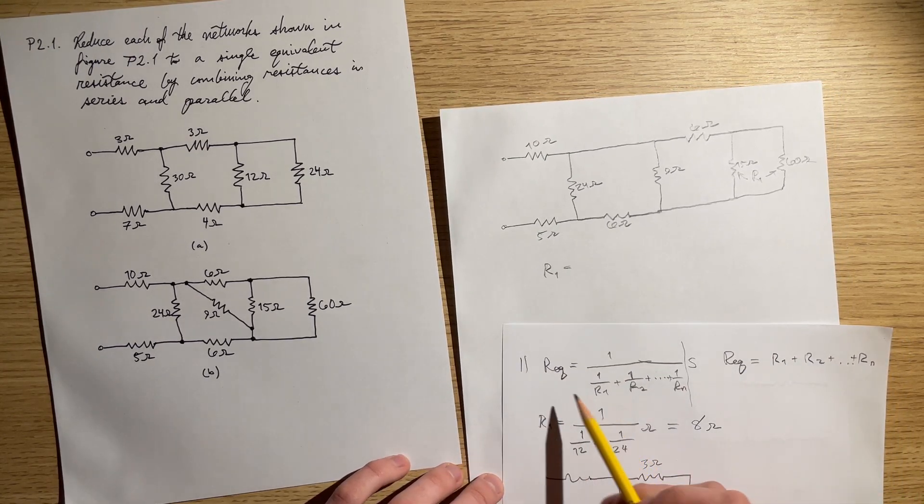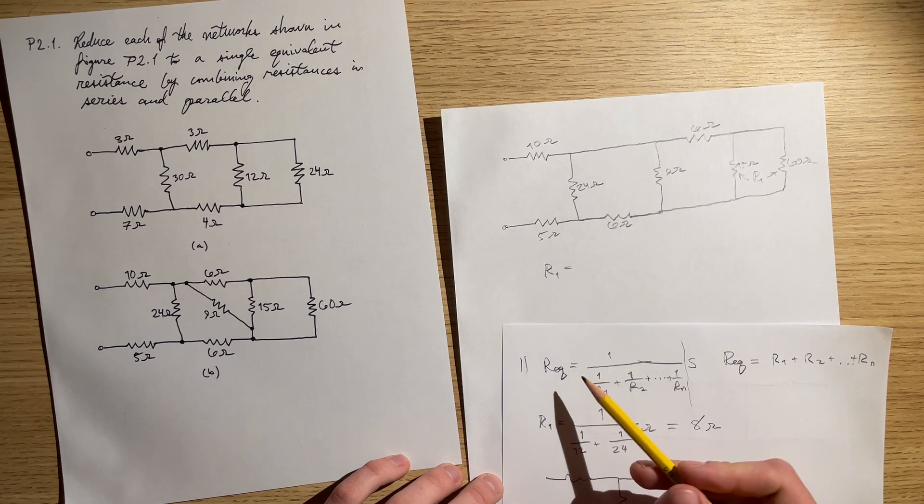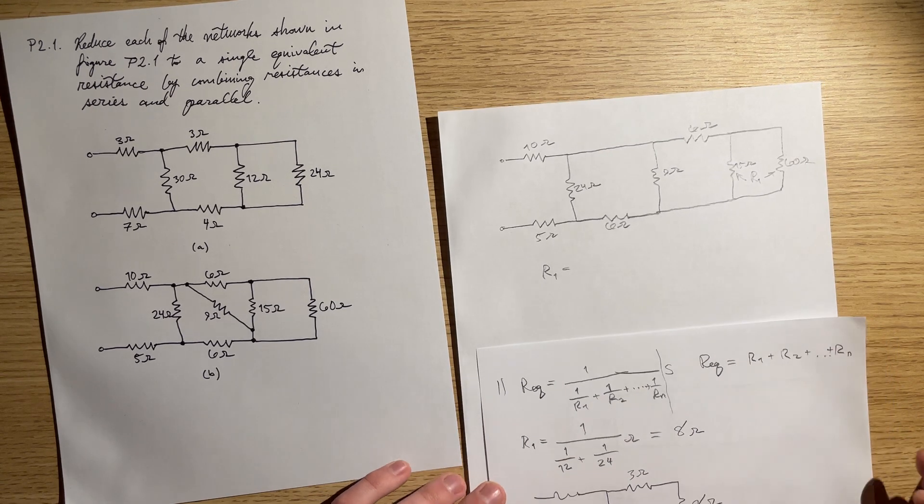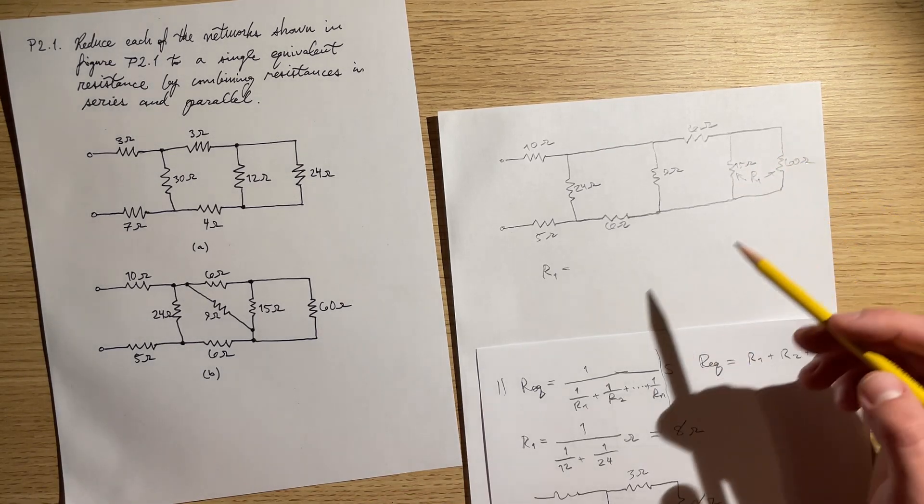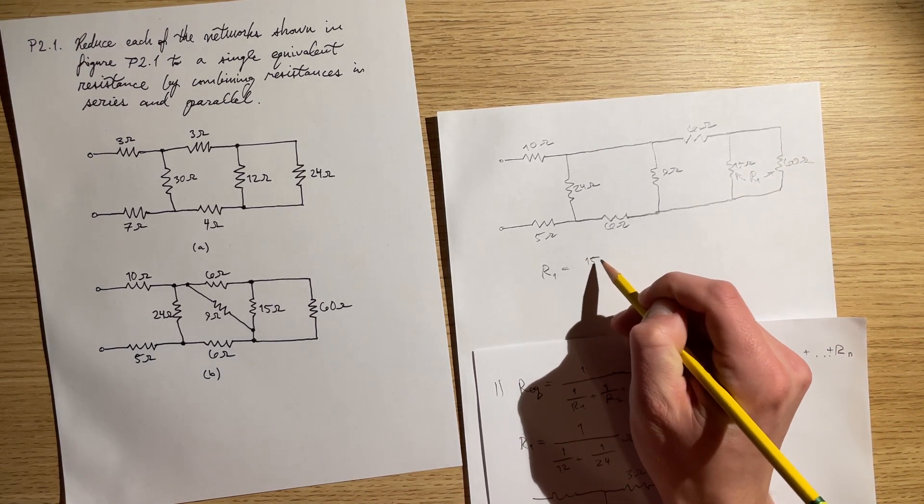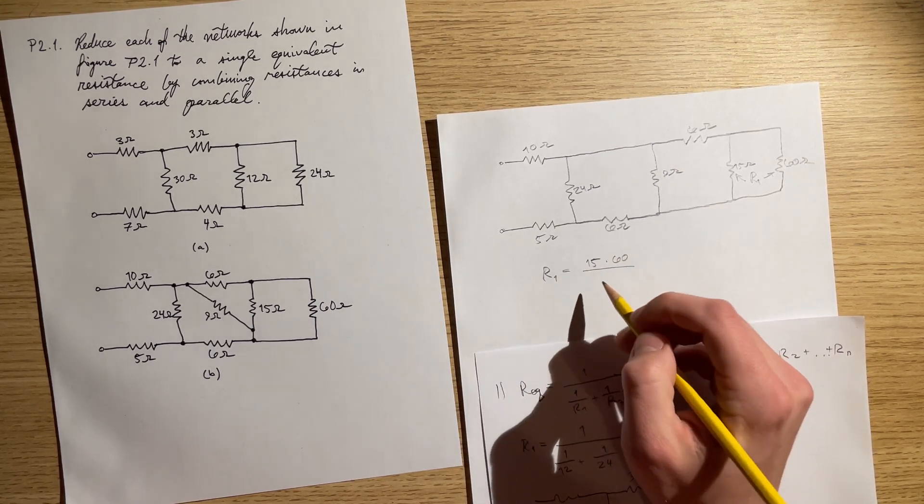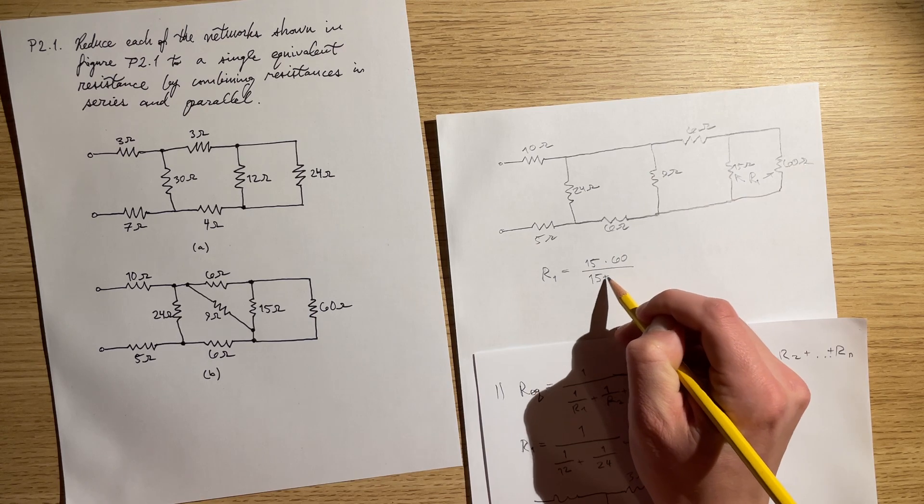this one for parallel, this one for series. But whenever you just have two of these, it's often easier just to write the two different resistances like so.